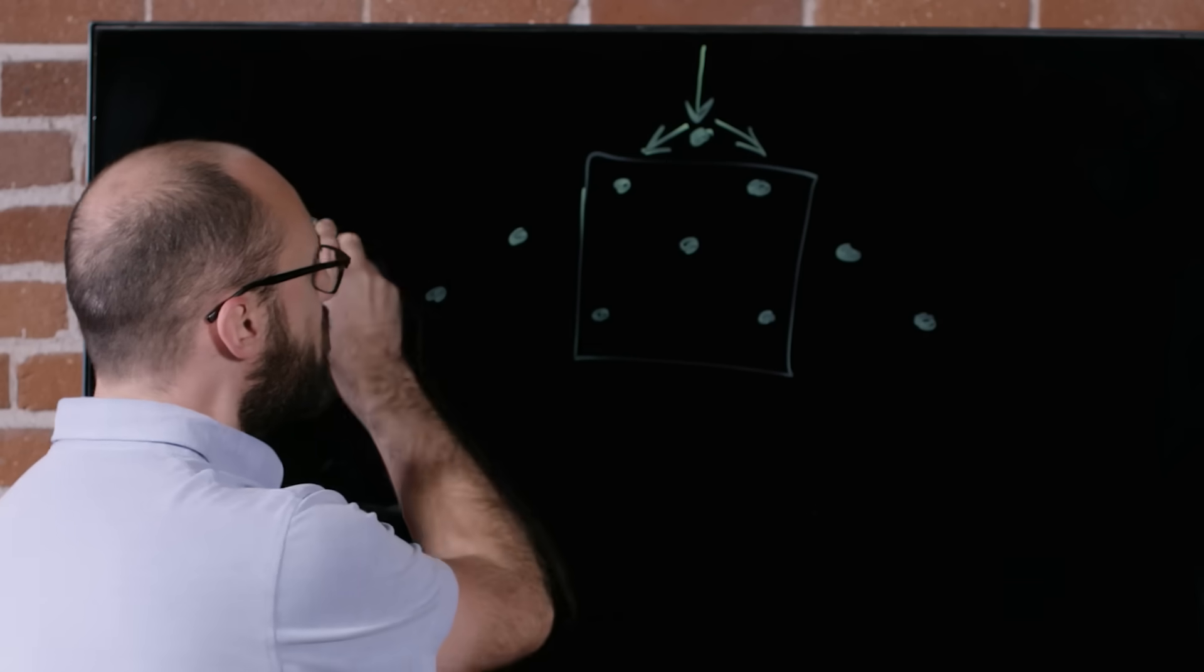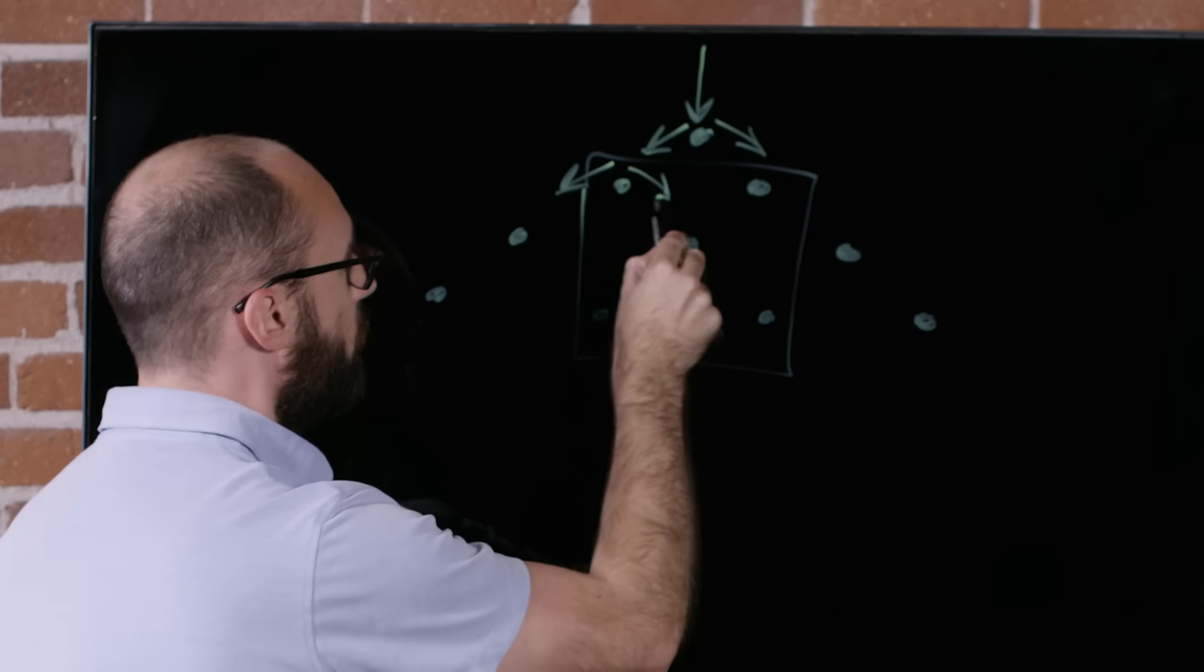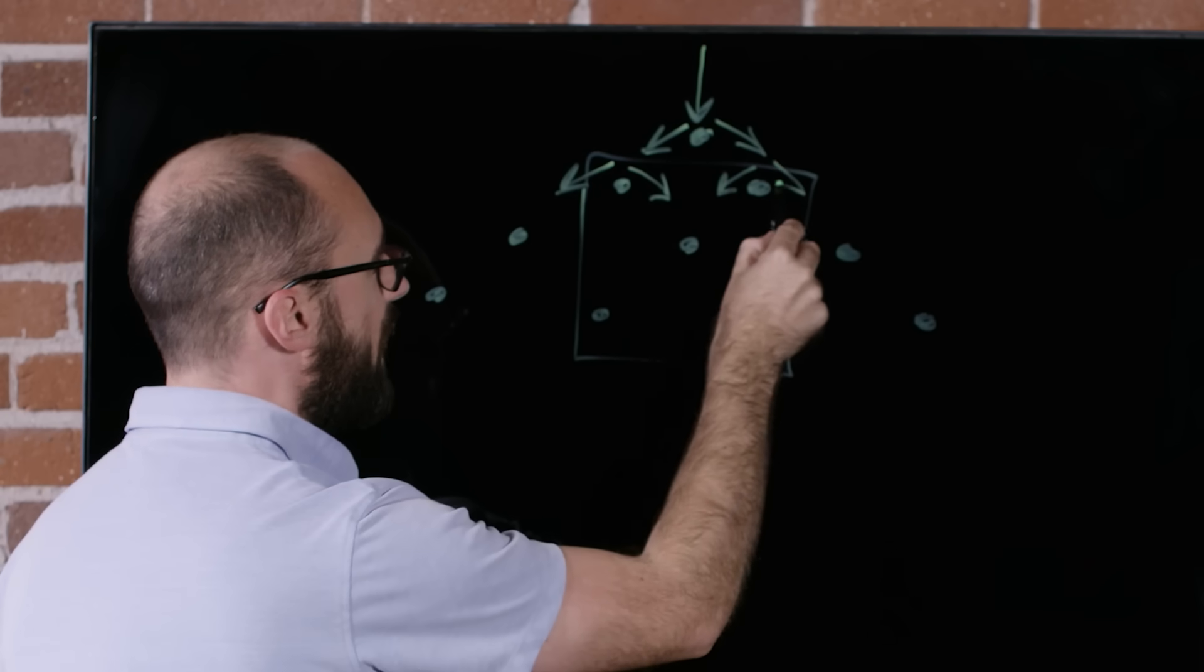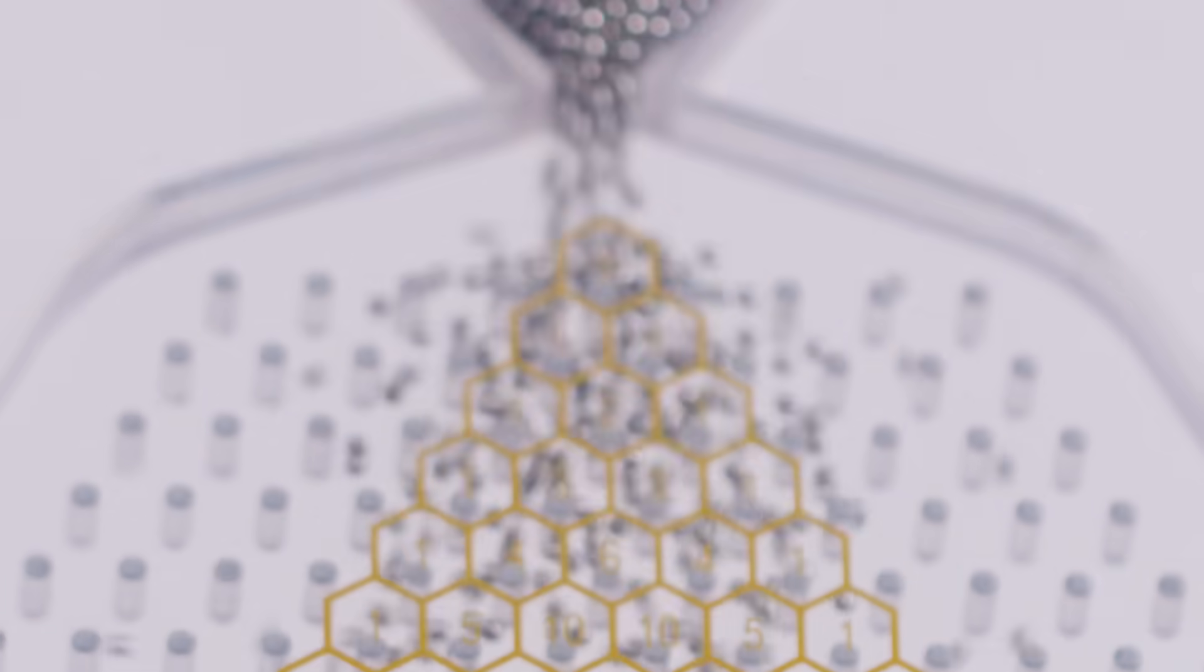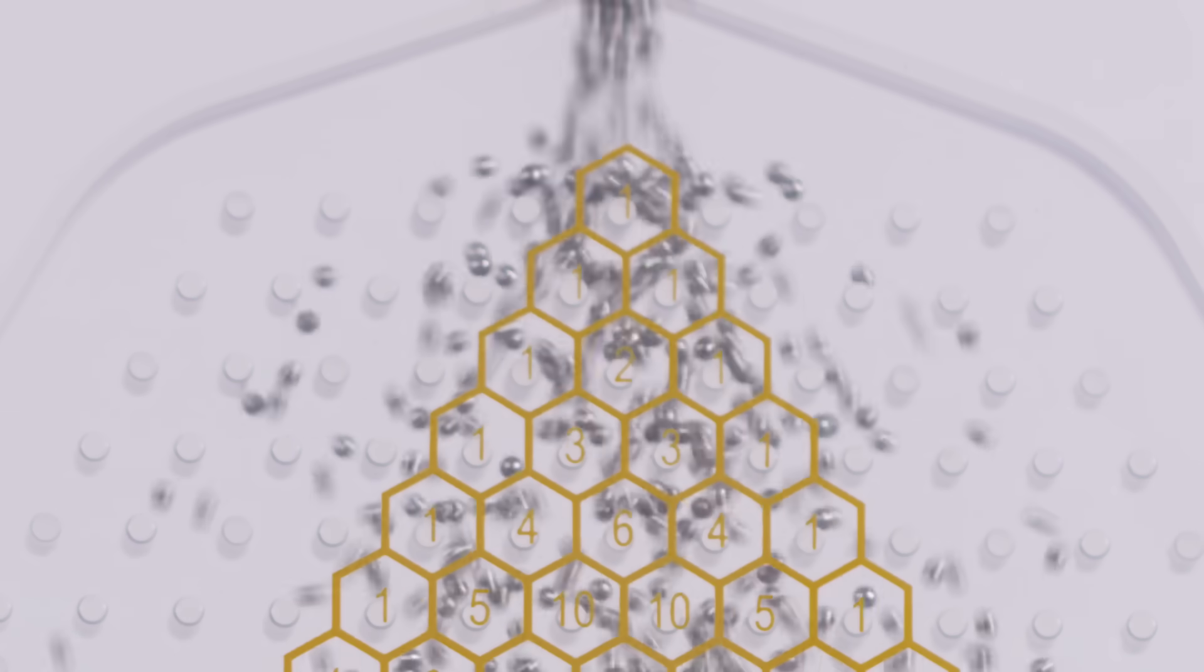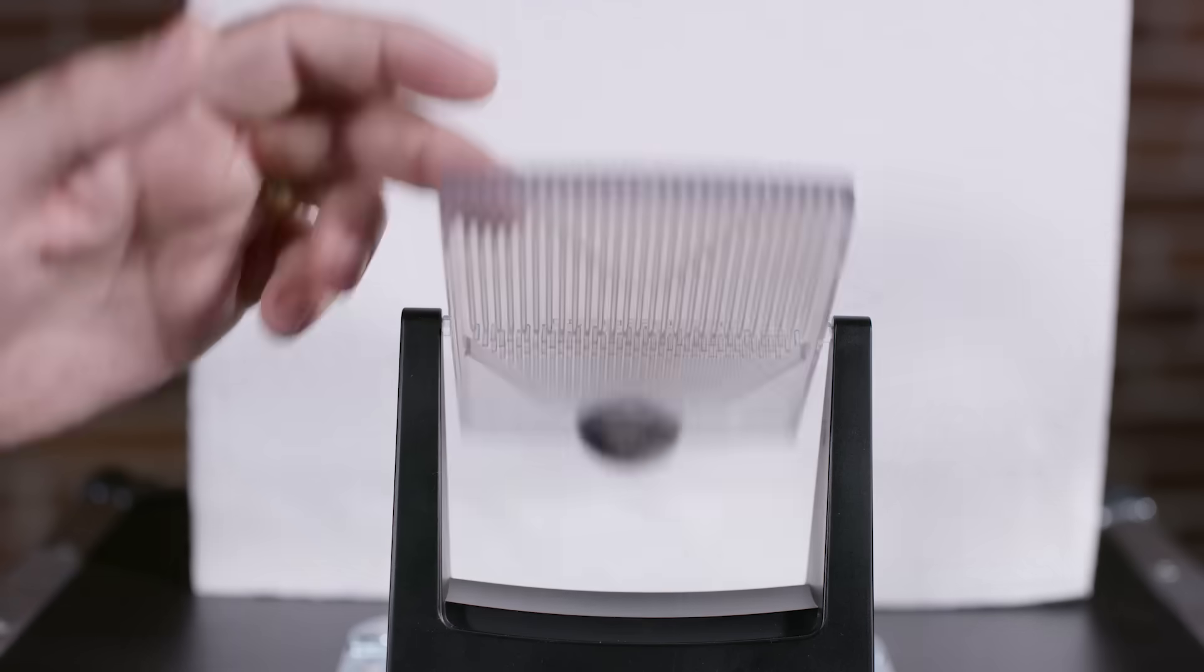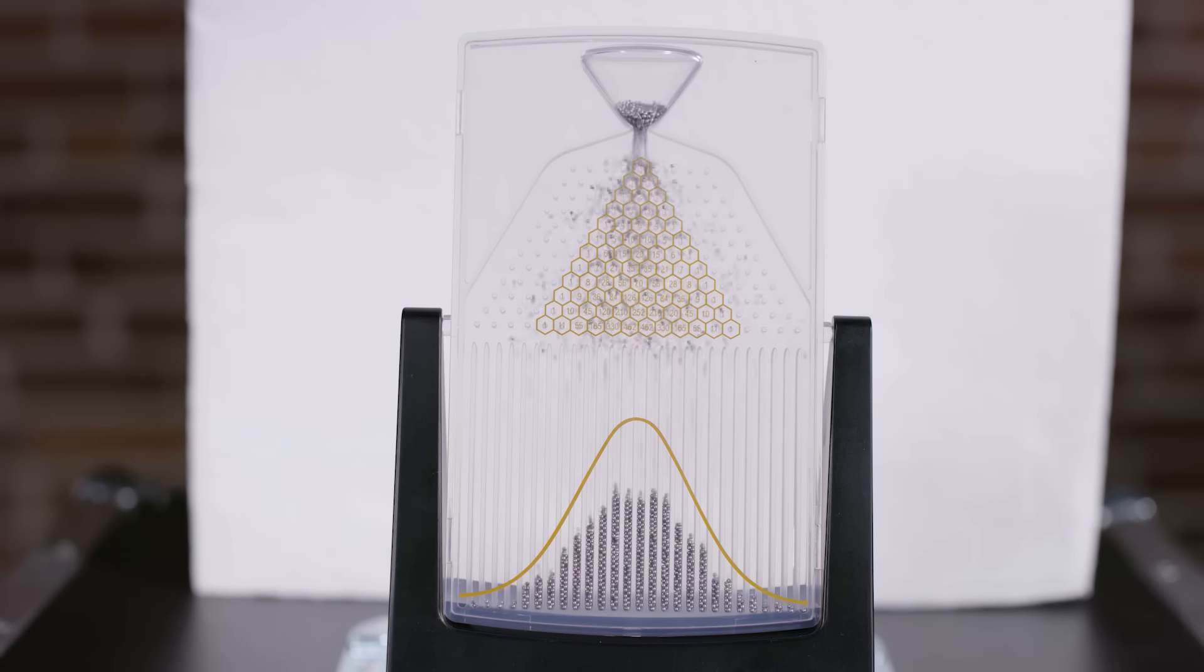Once that's happened, they've reached the second row of pegs where they will either go left or right. Left or right. Now because at each peg a left or right bounce is equally likely, in the long run, across a large number of trials, we expect balls whose complete paths contain about the same number of left and right turns to be the most common.